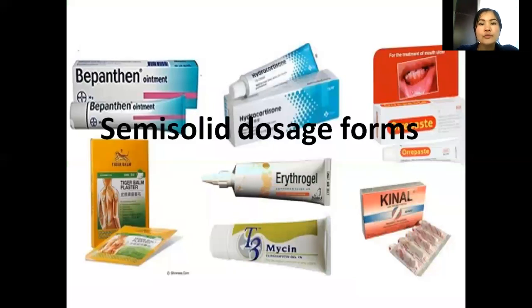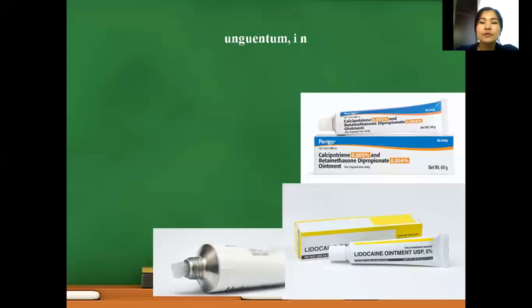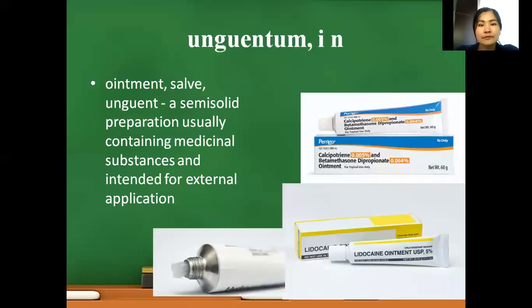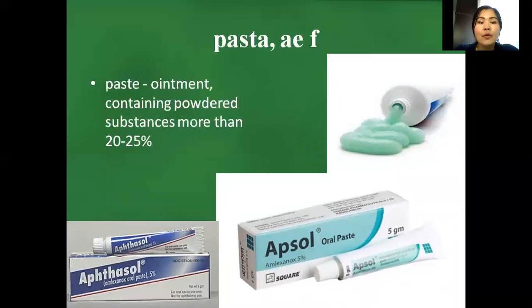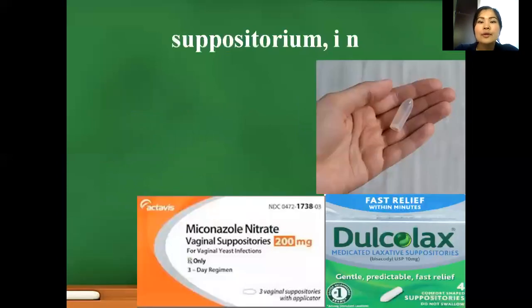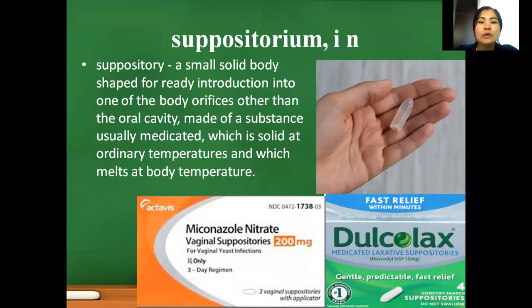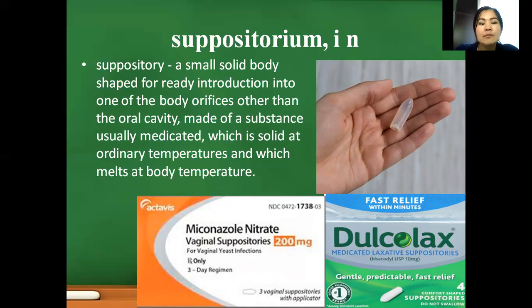The next group of dosage forms is semi-solid dosage forms. Unguentum — ointment — a semi-solid preparation usually containing medicinal substances and intended for external application only. Pasta — paste — a type of ointment containing powdered substances more than 20–25%. Suppositorium — suppository — a small solid body shaped ready for introduction into one of the body orifices other than the oral cavity, made of a substance usually medicated, and usually solid at ordinary temperature but easily melting at body temperature.